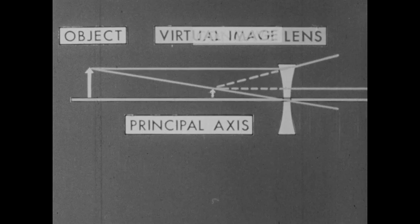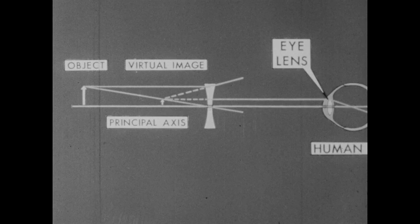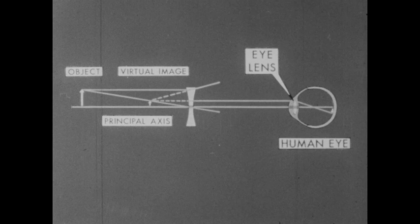But when we see an image through a lens, remember we are actually using two lenses: one man-made lens and the eye lens, a convex lens which forms real images.